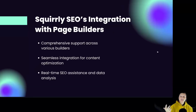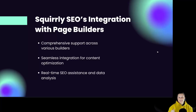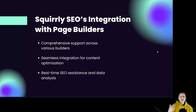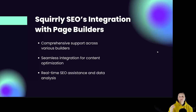Squarly's SEO integration with page builders offers comprehensive support across various builders, seamless integration for content optimization, and real-time SEO assistance and data analysis. Squarly SEO offers robust integration with multiple page builders like Elementor, Oxygen, Divi, Thrive Architect, Bricks, Zion, Beaver, and so on, ensuring that you can optimize your content effectively without disturbing your design workflow.